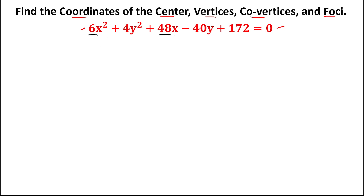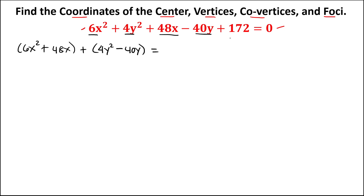First, group all x terms: we have 6x² + 48x. Then group all y terms: 4y² − 40y. Then transpose the constant to the other side, so this becomes negative 172.